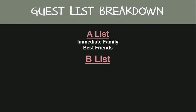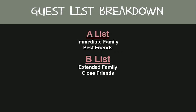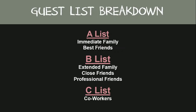Then we have your B-list. This list includes extended family, meaning those people in your life who are like family to you, or family members you're not particularly close with or haven't spoken to in over a year, your close friends — people who you see monthly — and professional friends like your hairdresser, nail technician, accountant, doctor, and attorney. And your C-list, which contains co-workers — anyone you work with or do business with — and any additional friends you may not see or speak with as often as you'd like.